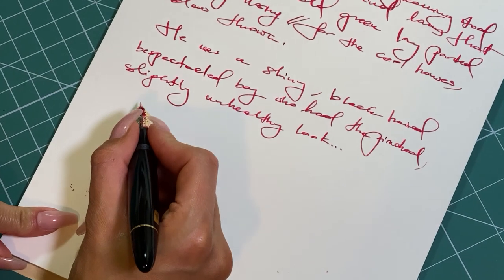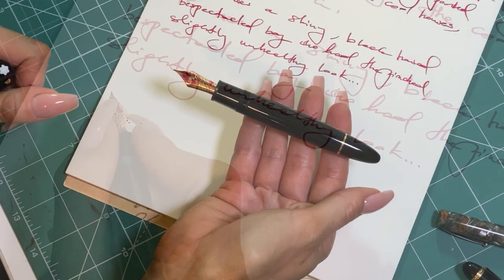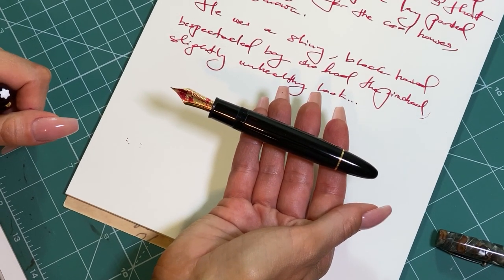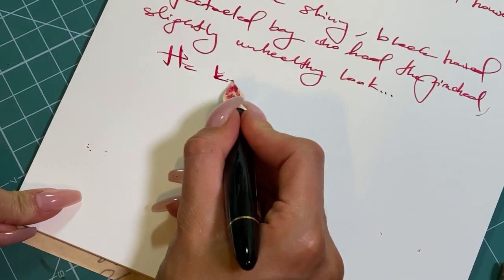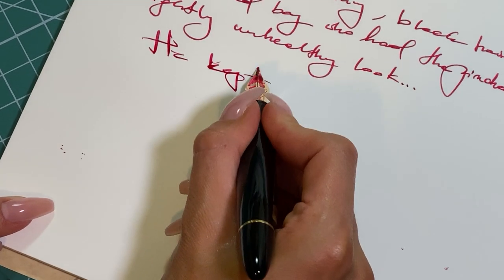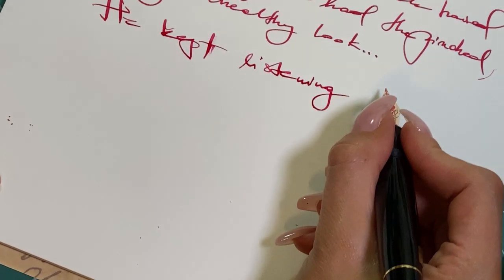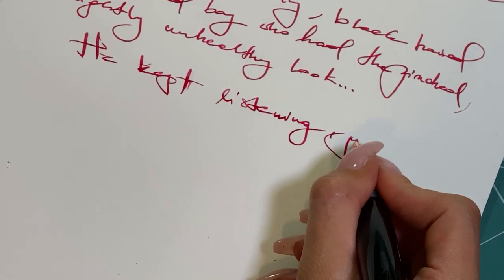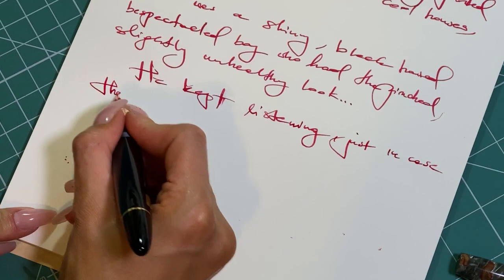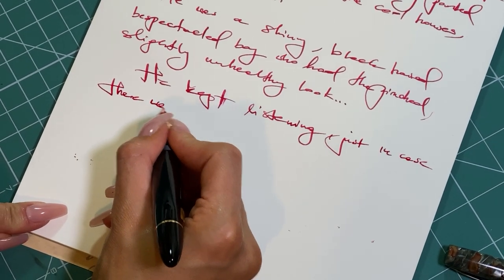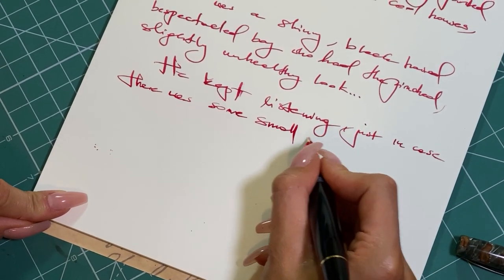And now back to Montblanc Meisterstück 149 Calligraphy with Expression nib. You probably saw it skipped. It happens with this pen. But you can also see the places where the feed touches the paper. So if you press it too much or hold with a shallow angle it can happen.